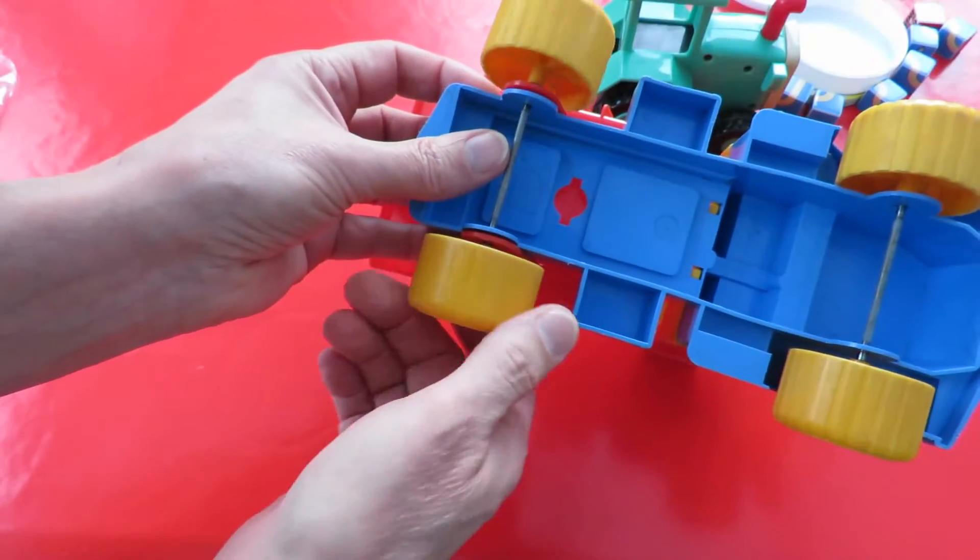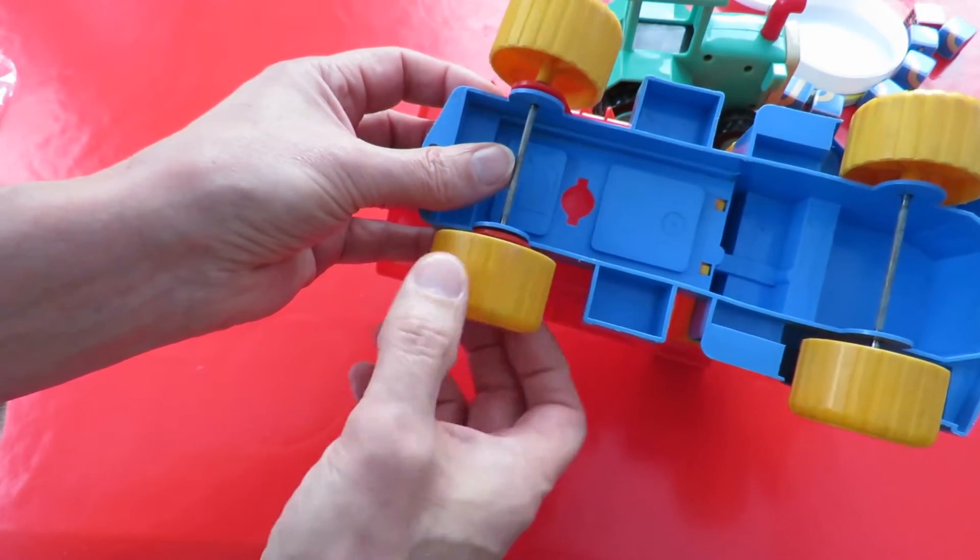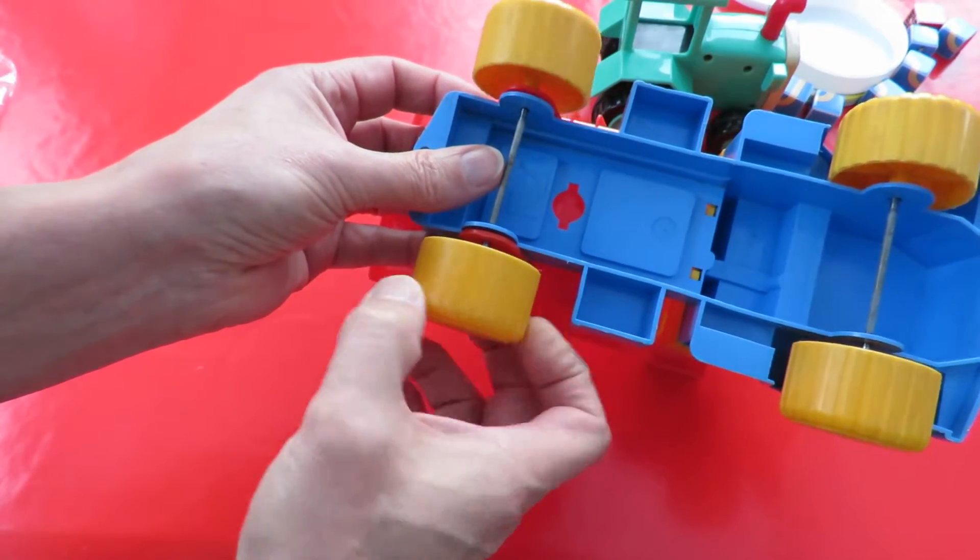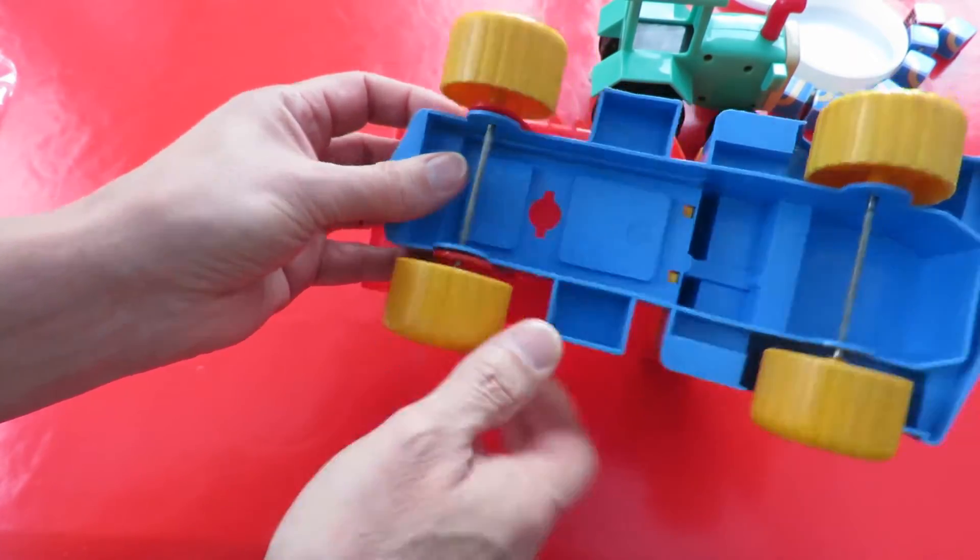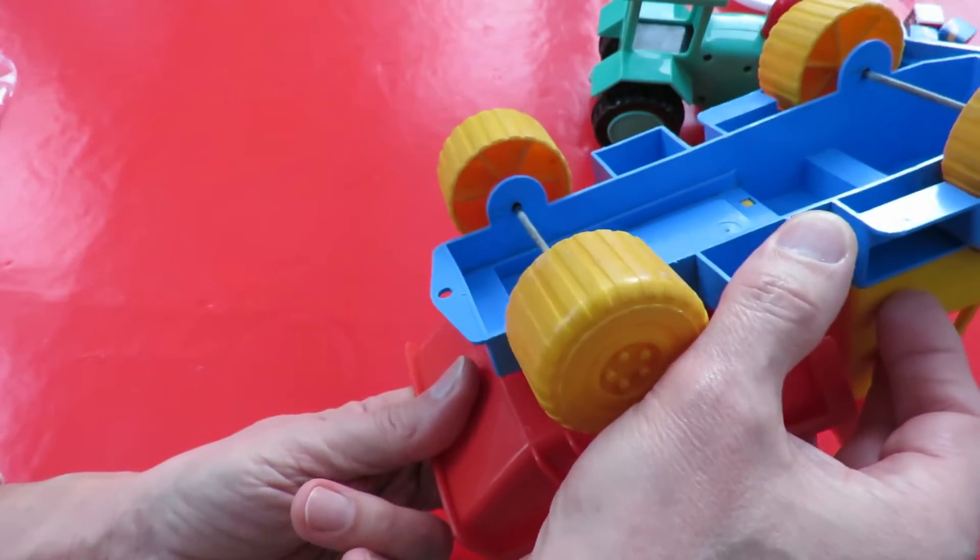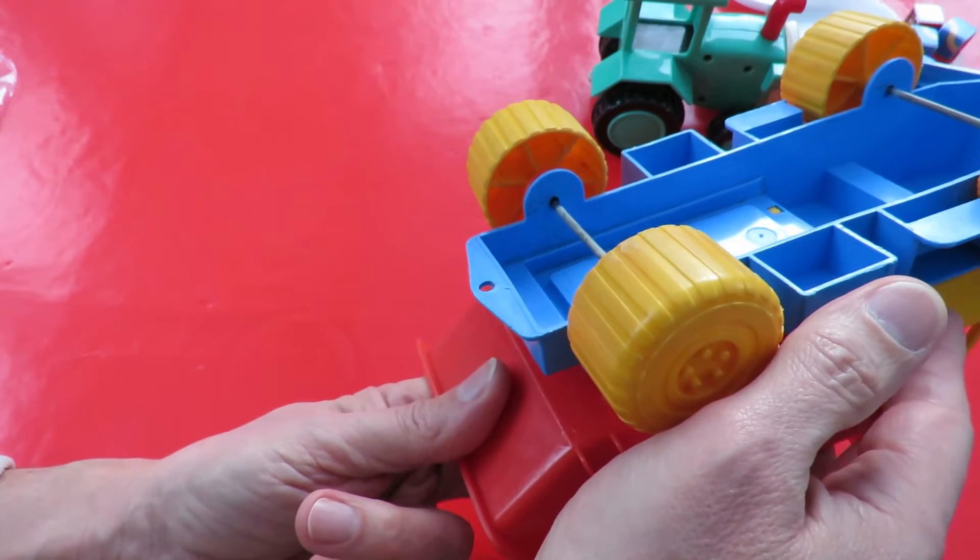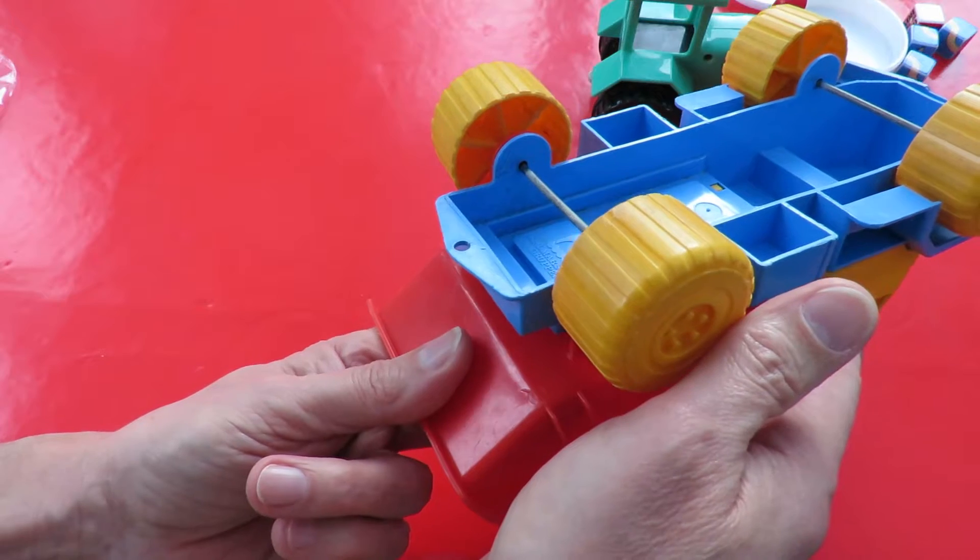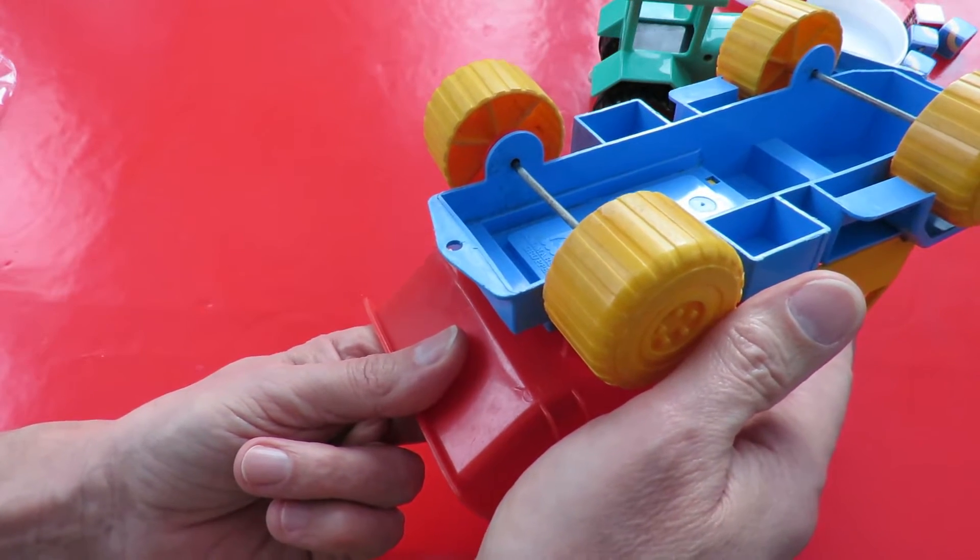That axle's quite bent in that so at the very least I'm going to have to try and straighten that. It's got a name on it, Kalmarsunds Gruppen.